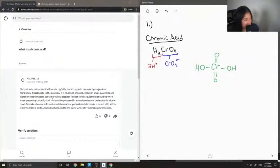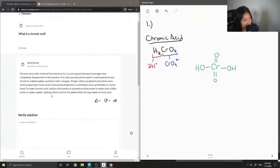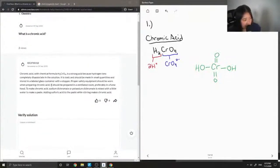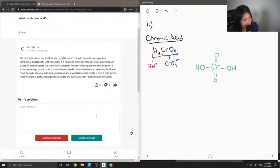To make chromic acid, sodium dichromate or potassium dichromate is mixed with a little water to make a paste. Adding sulfuric acid to the paste while stirring makes chromic acid. Because this was well explained, this solution is correct.